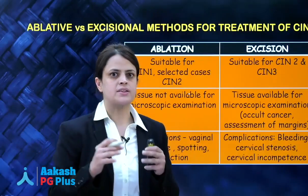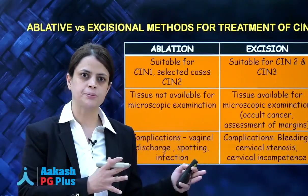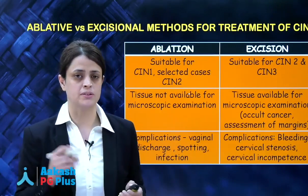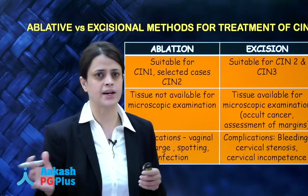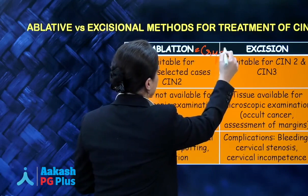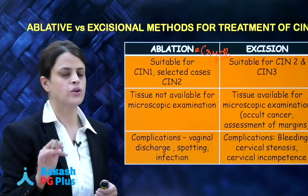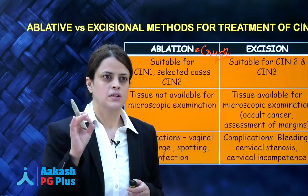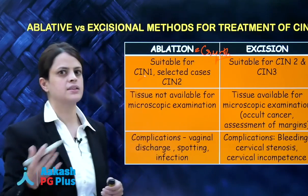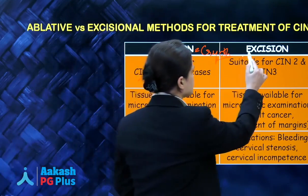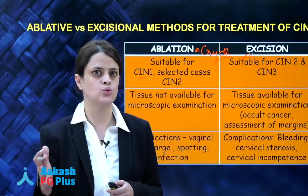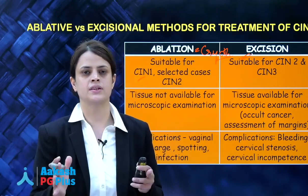What is the difference between cryotherapy — an ablative treatment — and conization or LEEP, which are excisional methods? Ablation, synonymous with cryotherapy, is generally suitable for milder CIN lesions such as CIN 1 and sometimes selected cases of CIN 2. Excisional procedures are more suitable for higher grade CIN lesions — CIN 2 and CIN 3. For CIN 3, you would always use an excisional procedure.